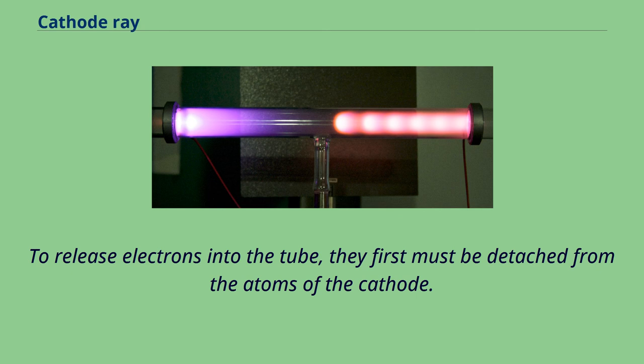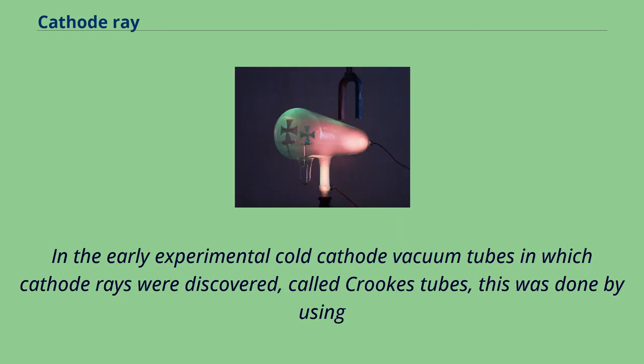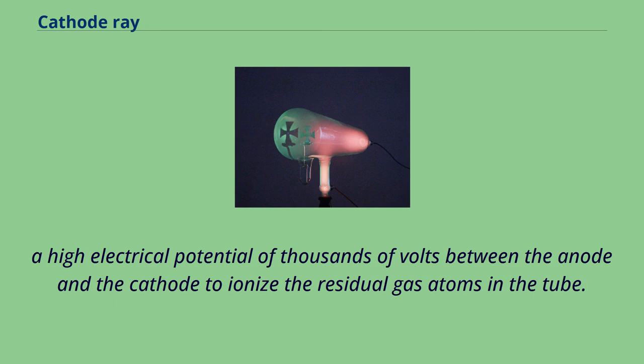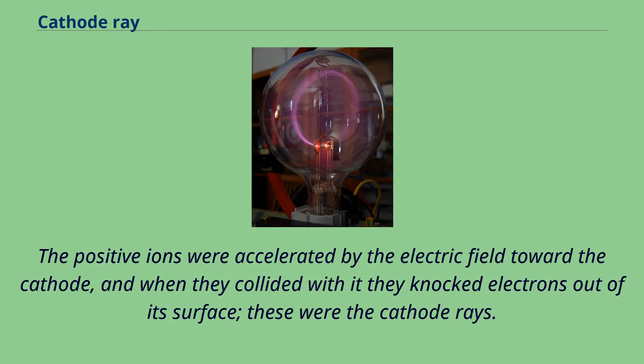To release electrons into the tube, they first must be detached from the atoms of the cathode. In the early experimental cold cathode vacuum tubes in which cathode rays were discovered, called Crookes tubes, this was done by using a high electrical potential of thousands of volts between the anode and cathode to ionize the residual gas atoms in the tube. The positive ions were accelerated by the electric field toward the cathode, and when they collided with it they knocked electrons out of its surface. These were the cathode rays.